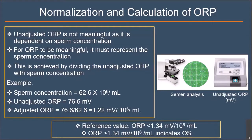As Professor Henkel mentioned during his lecture, ORP by itself is not very meaningful, and it is important to normalize the ORP. This is accomplished by dividing the ORP by the sperm concentration, giving us the adjusted ORP. The reference value of the adjusted ORP is less than 1.34 millivolts per million sperm. Any values higher than this indicate the presence of oxidative stress in that given sample.